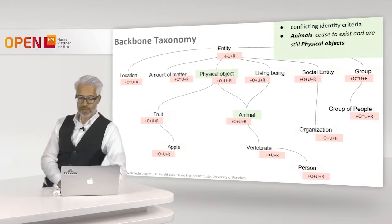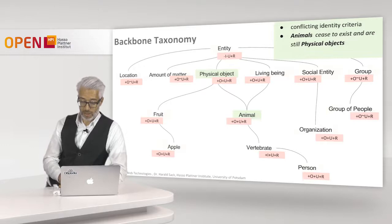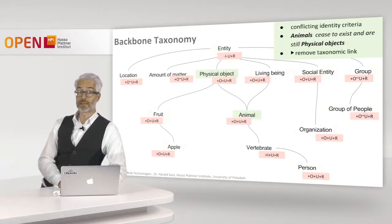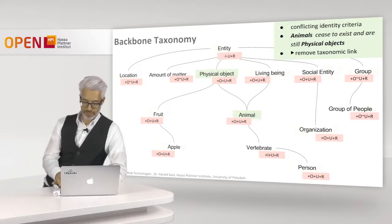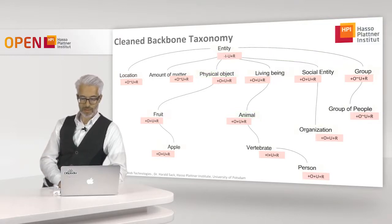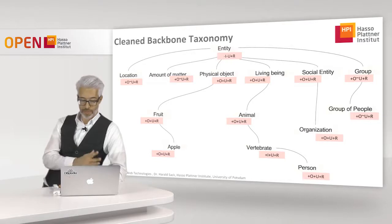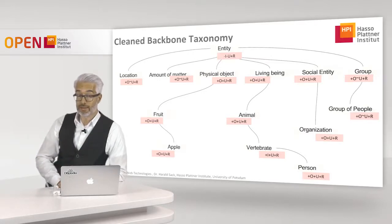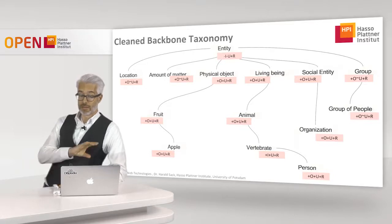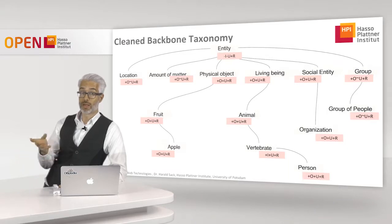After removing that link, we have a cleaned backbone taxonomy with no violations of any of the OntoClean rules, including the identity extensions. Now let's look at all the other classes which are non-rigid, to check if there are further violations to be considered.